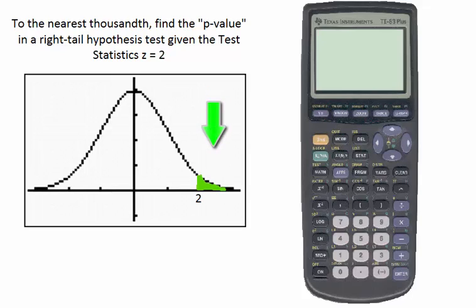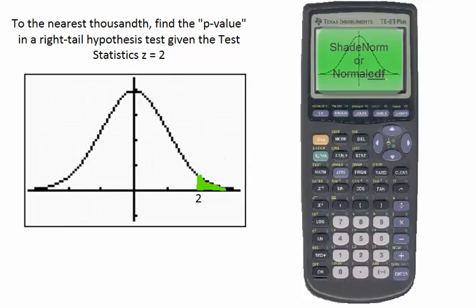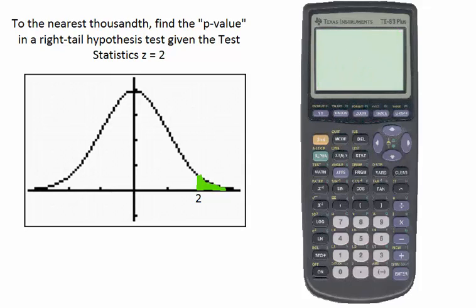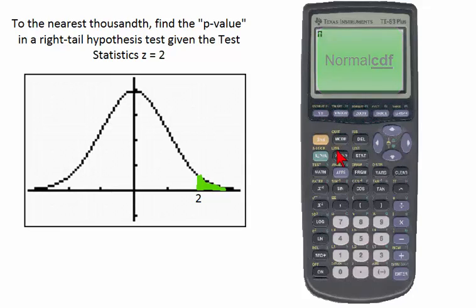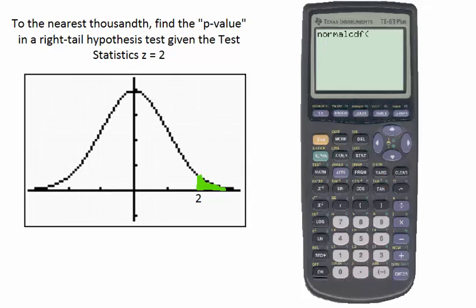The p-value in the right-tail hypothesis test associated with a test statistic of 2 will be the area under the curve to the right of 2 in the normal distribution. We find the area using either the shade normal function, which gives us the area plus diagram, or the normal cumulative density function — going to second, distribution, number 2. The number on the x-axis furthest to the left is 2, followed by a comma, and the number furthest to the right is infinity, or E99.